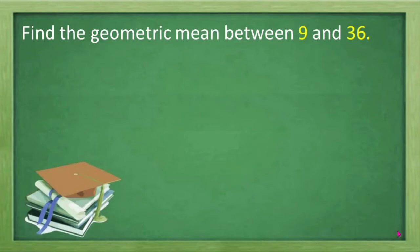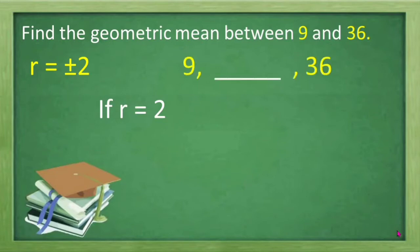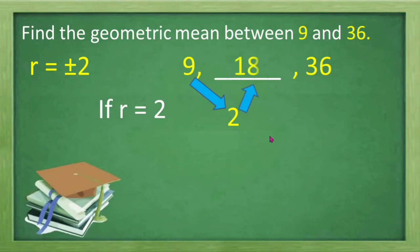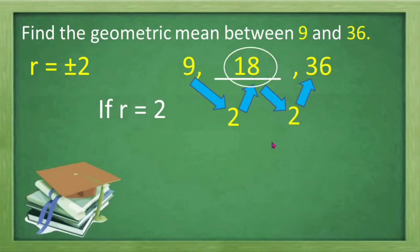Now we're going to find the geometric mean between 9 and 36 using r equal to positive and negative 2. If r is equal to positive 2, given the sequence 9, blank, 36, we multiply the first term 9 by our common ratio 2, which gives us the second term 18. Let's check: 18 multiplied by 2 equals 36. Yes. Therefore, 18 is the positive geometric mean between 9 and 36.